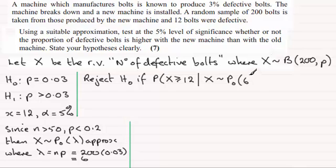So X is approximately distributed like that. I'm going to reject the null hypothesis if this probability is less than or equal to the significance level, 5%.